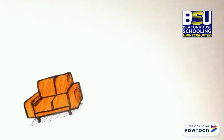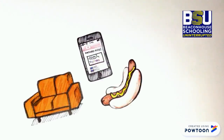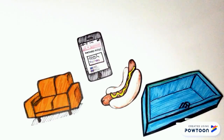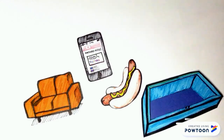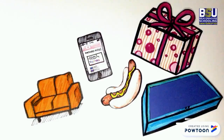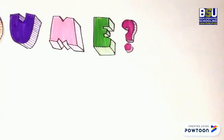All 3D objects around you have a volume — the sofa you're sitting on, the phone you're holding, and even the hot dog on the plate next to you. But why is this important to you? Well, knowing this, for example, you can figure out how much water you need to fill in your pool, or whether or not the gift you bought for your friend can fit in the box you're wrapping. So what is volume?